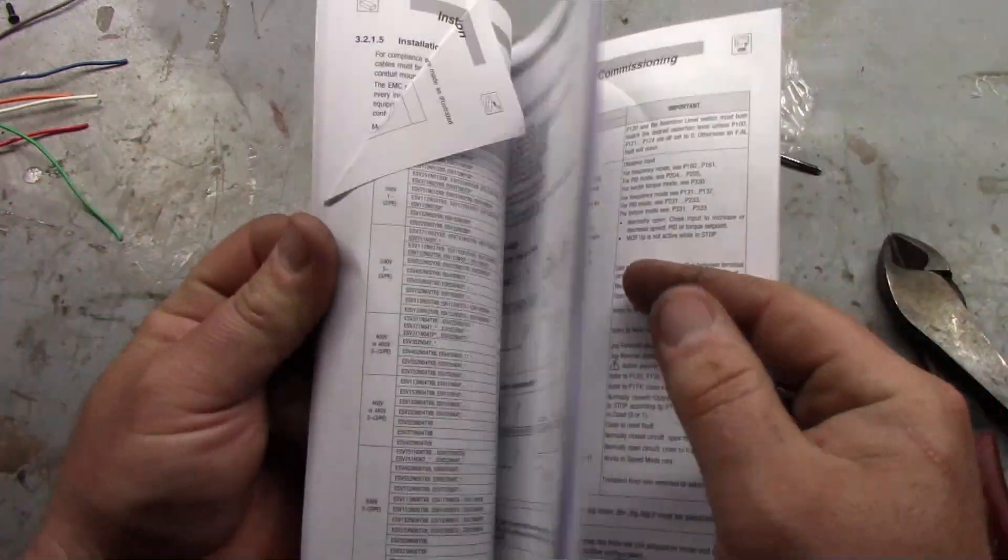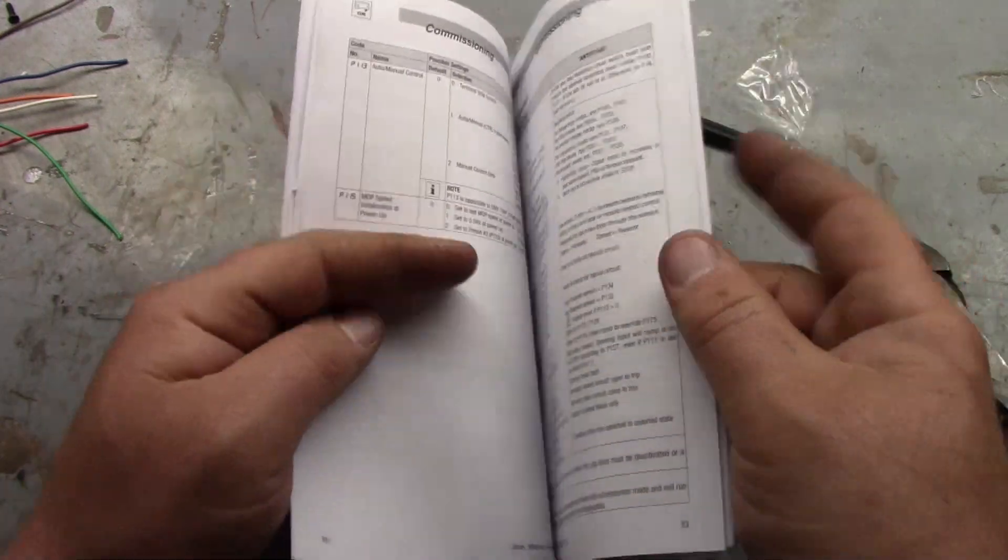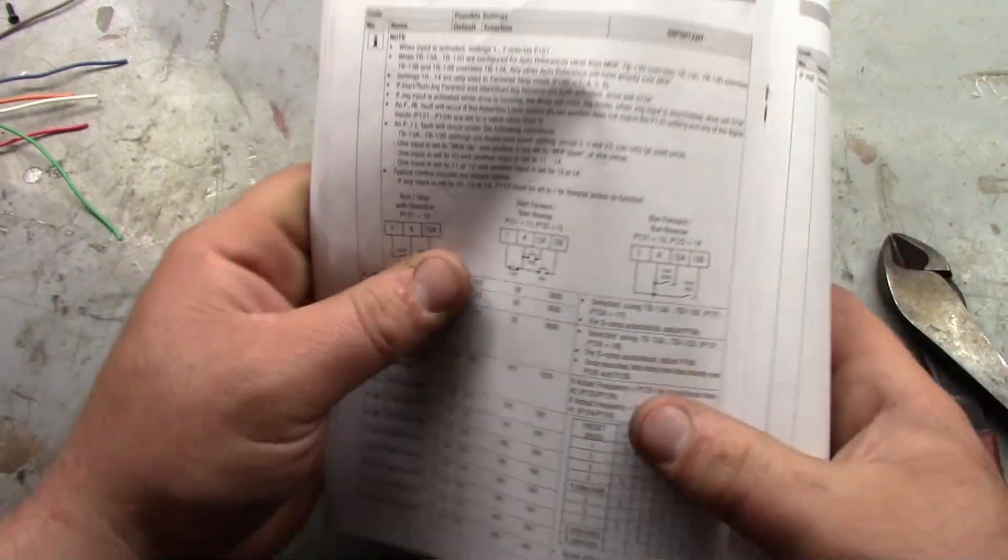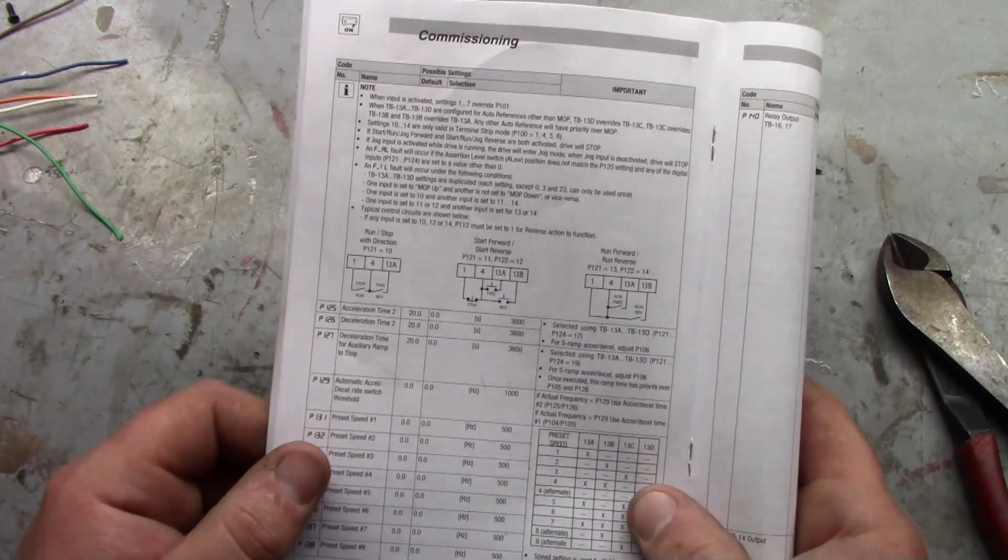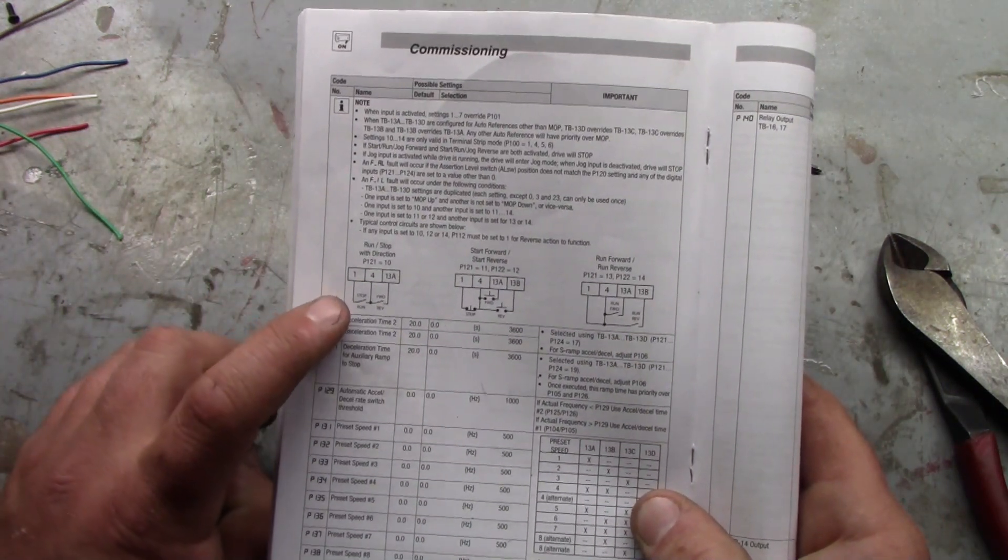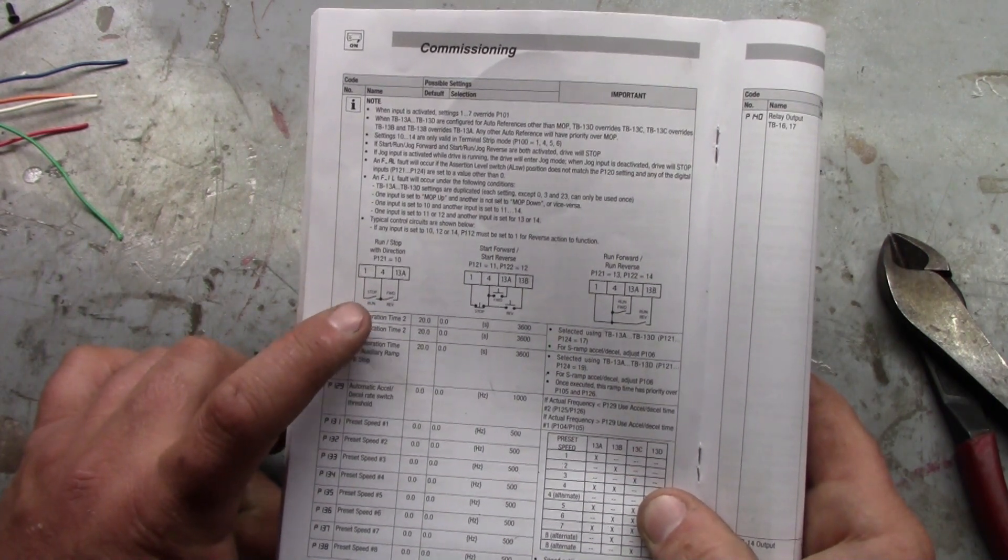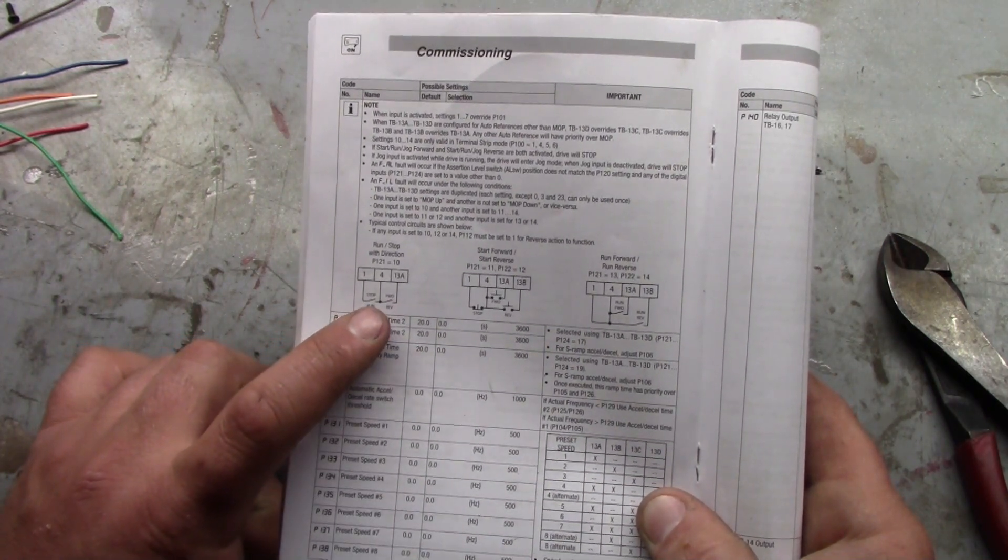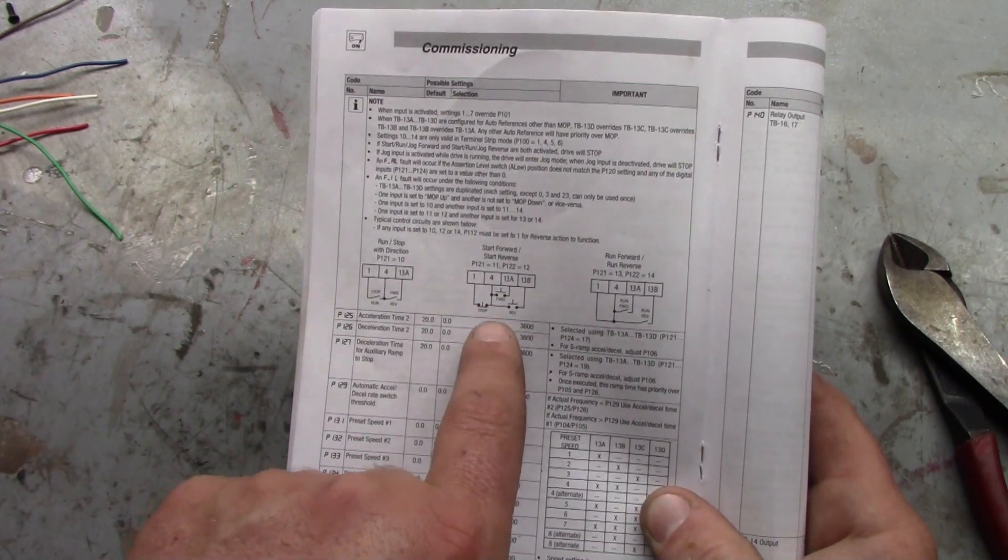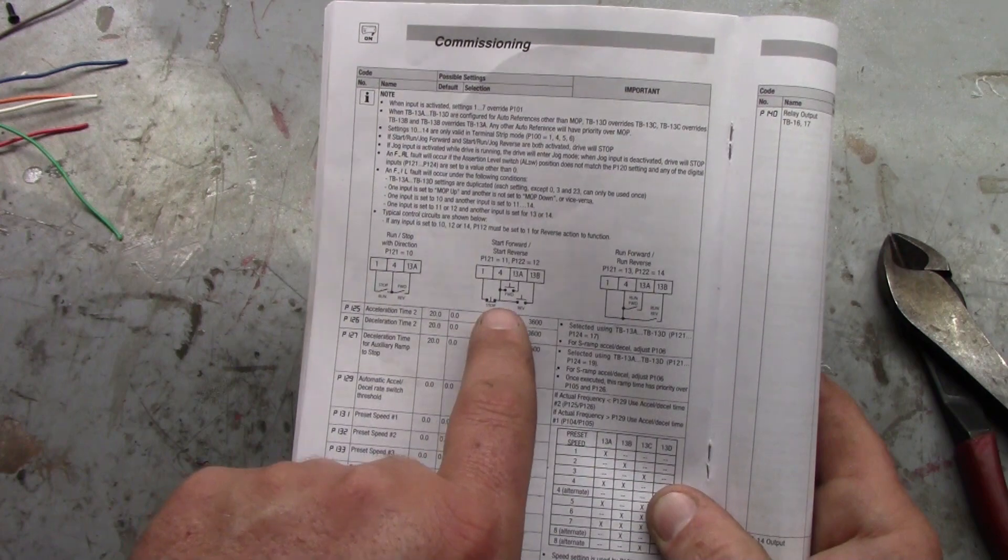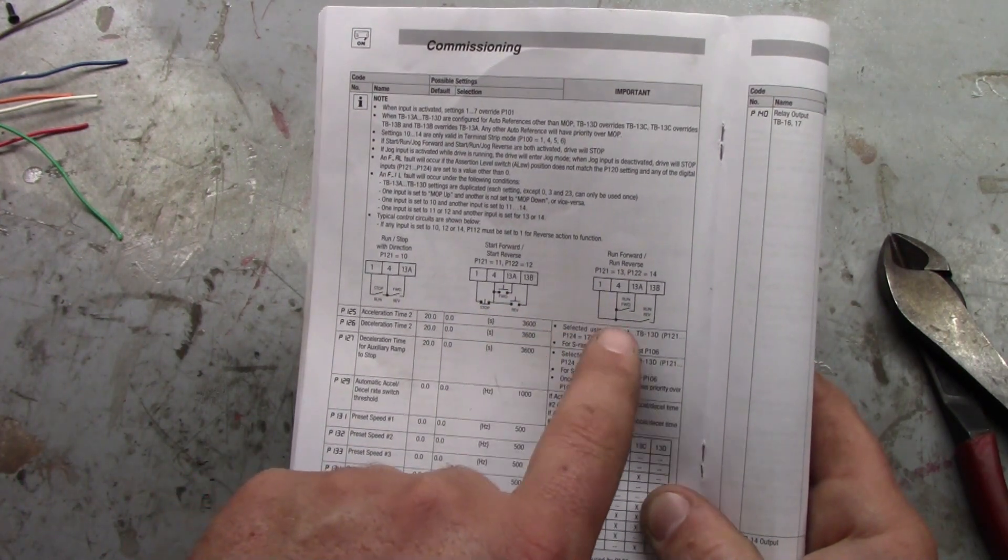A cool thing is in this book it actually has common setups for remote panels. There's three different kinds here. This one here has a toggle switch for stop and run and a toggle switch for forward and reverse. This one here has a push button for stop, a latching push button for stop, and momentary push buttons for forward and reverse.